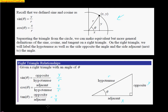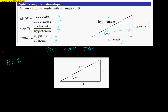One way to help us remember this is the phrase SOHCAHTOA. This helps us remember that sine is opposite over hypotenuse, cosine is adjacent over hypotenuse, and tangent is opposite over adjacent. This is all based on identifying the angle you're talking about: the side directly next to it is the adjacent side — adjacent means attached to. The side across from it is the opposite. And we always know the longest side, across from the 90-degree angle, is the hypotenuse.